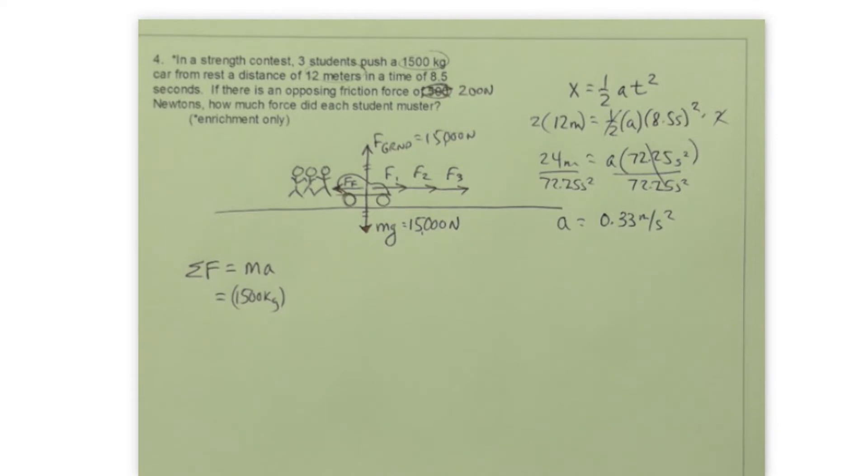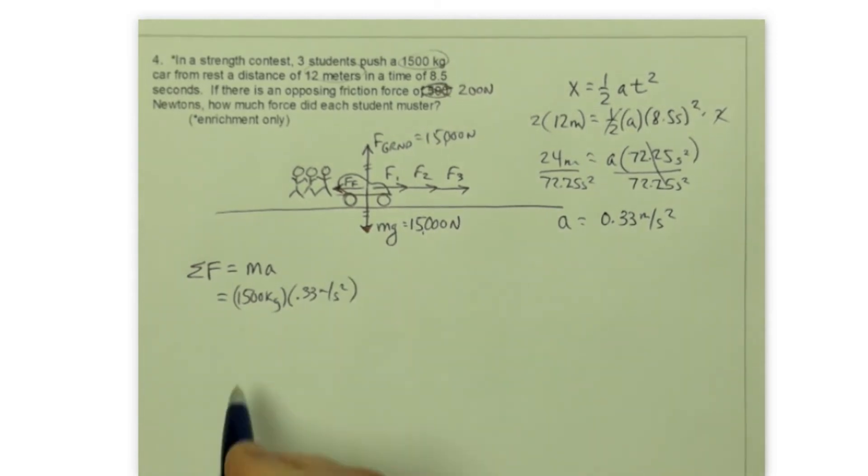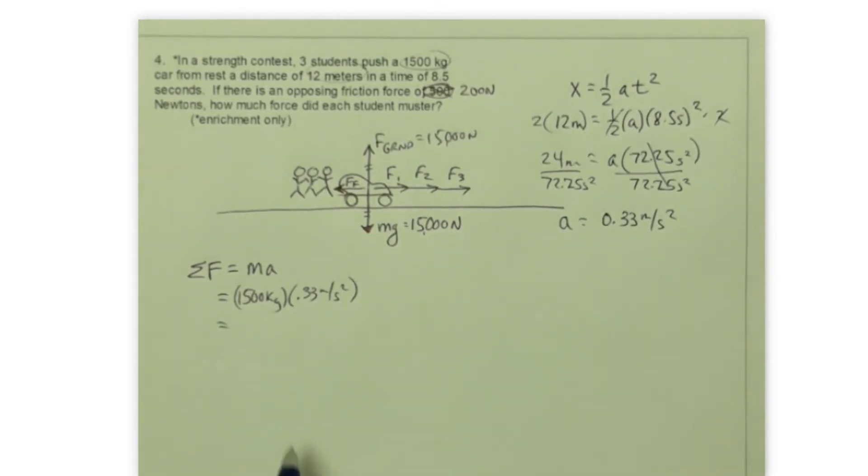So the acceleration that these three individuals were able to create on that car is about 0.33 meters per second squared. It means every second that car is changing its velocity by about 0.33 meters per second. And as you push that car, you probably recognize it's going faster and faster and faster. The rate at which it's going faster is at 0.33 meters per second squared. I'm going to take that and plug that in over here to calculate the net force that's acting on that car. Now 1,500 times a third is about 500 newtons.